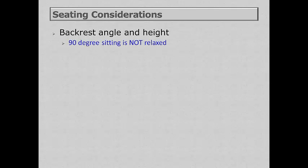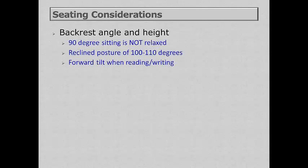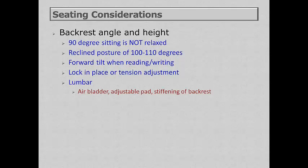Backrest angle and height is another consideration. A sitting position of 90 degrees is not very relaxed; the recommended angle is about 100 to 110 degrees. Some chairs come with a forward tilt mechanism, allowing the seat to tilt forward while doing reading and writing, so the person can be supported for those tasks and not just keyboarding. Backrest angles either lock in place or adjust with a tension knob, which can be adjusted according to the person's weight or force. Lumbar supports can be adjusted with air pressure, an adjustable pad, or by stiffening or loosening the backrest.